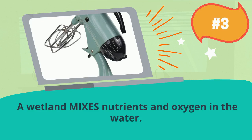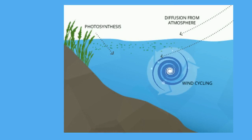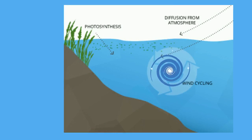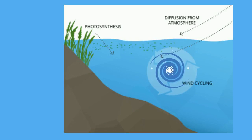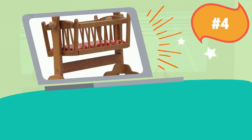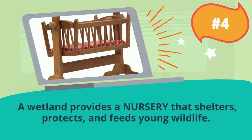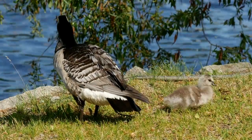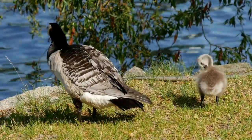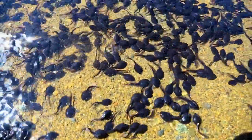A wetland mixes nutrients and oxygen in the water. Thanks to weather patterns and wind, the wetlands are able to cycle, stir, or mix the water — this helps keep oxygen levels steady and regulate surface conditions. A wetland also provides a nursery that shelters, protects, and feeds young wildlife. Many spring babies are born in or near the wetland, like this gosling and these tadpoles who will grow up to be frogs.